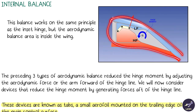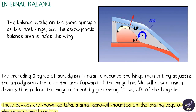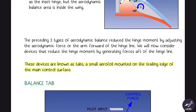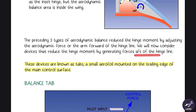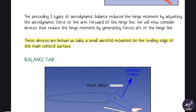Because it is inside the aircraft structure, the overall drag is also reduced. Those three types reduce the hinge moment by adjusting the aerodynamic force forward of the hinge line. Now we look at devices that reduce the hinge moment after the hinge line — these are known as tabs, which are small aerofoils mounted on the trailing edge of the main control surface.